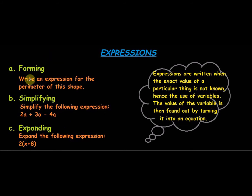For forming an expression, you can get a question like: write an expression for the perimeter of the shape. The shape and sides would be given, and you simply form the expression based on the information provided. For simplification, a question like 'simplify 2a plus 3a minus 4a' could come. For expanding, a question like '2 bracket x plus 8 bracket close' — you expand and write as a second expression.